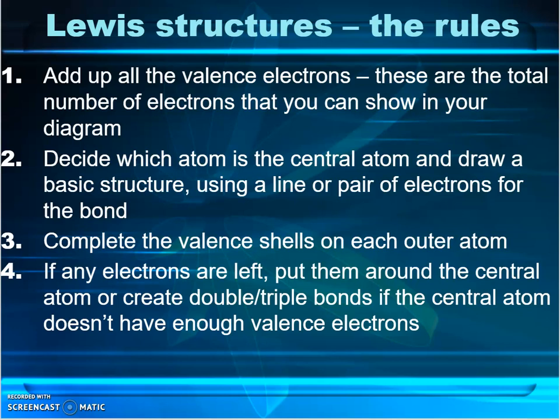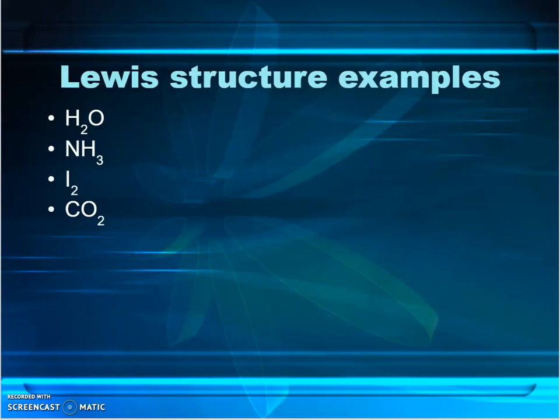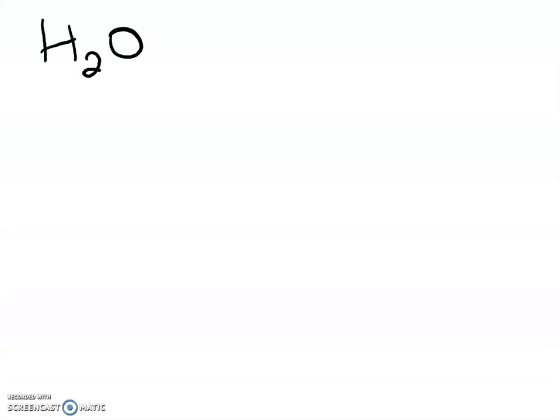Now this might sound confusing, but let me show you some examples. We're going to do water, ammonia, iodine, and carbon dioxide. Hopefully by the time I've finished those, you'll be able to see what to do. I might also do a fifth example — phosphorus trichloride — just so you can really see how it works. So if we start off with water: the formula for water is H₂O, which everyone should know by now.